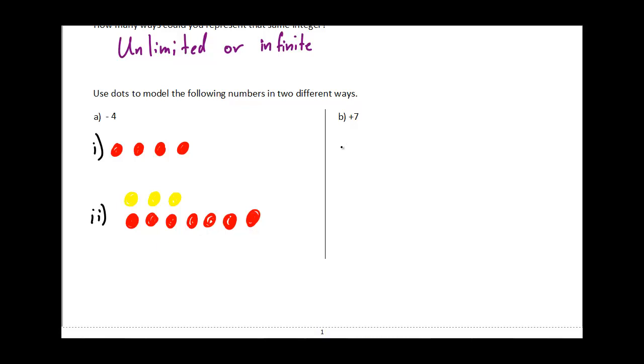If we want to do positive seven, the simplest possible way to do that would be to just draw seven positive dots. Five, six, seven.